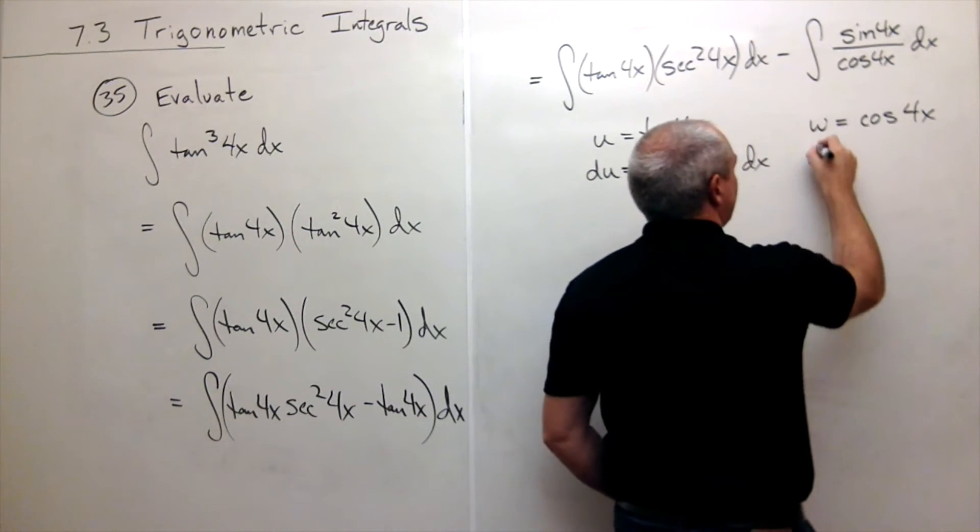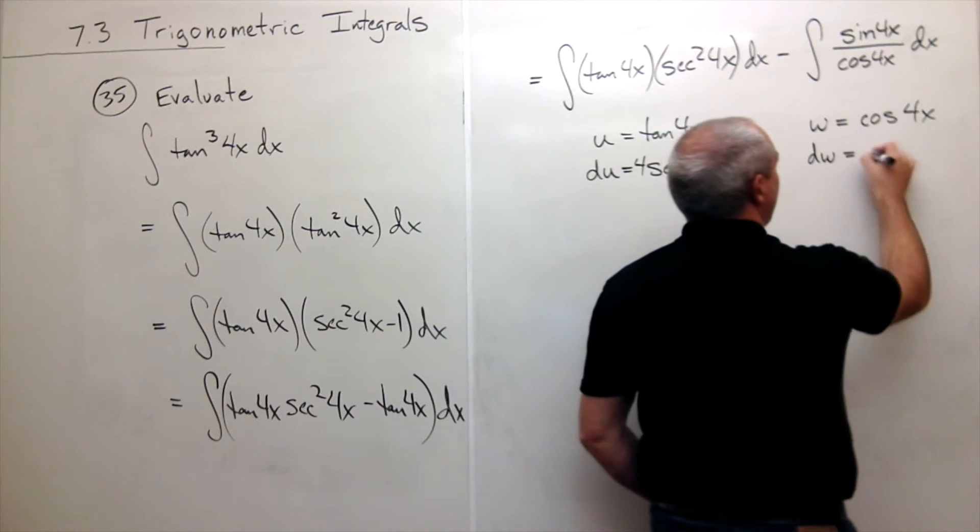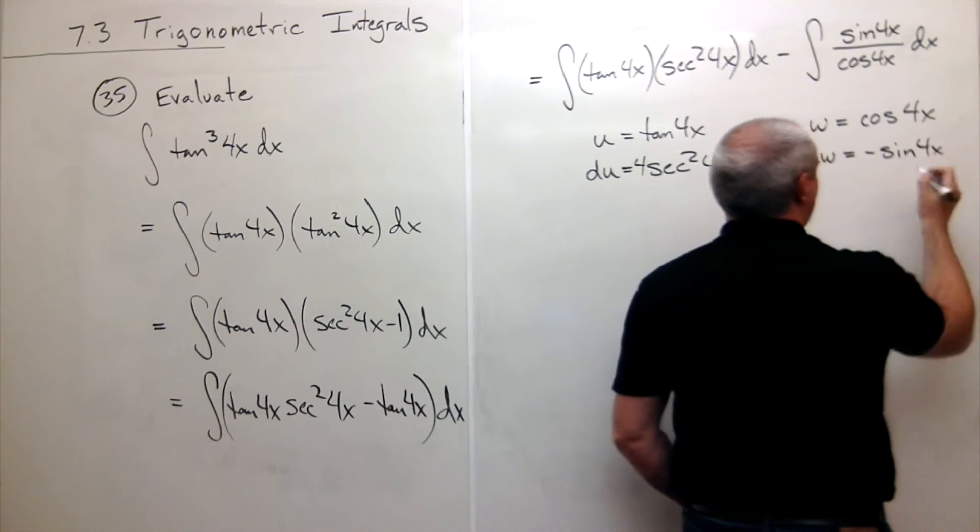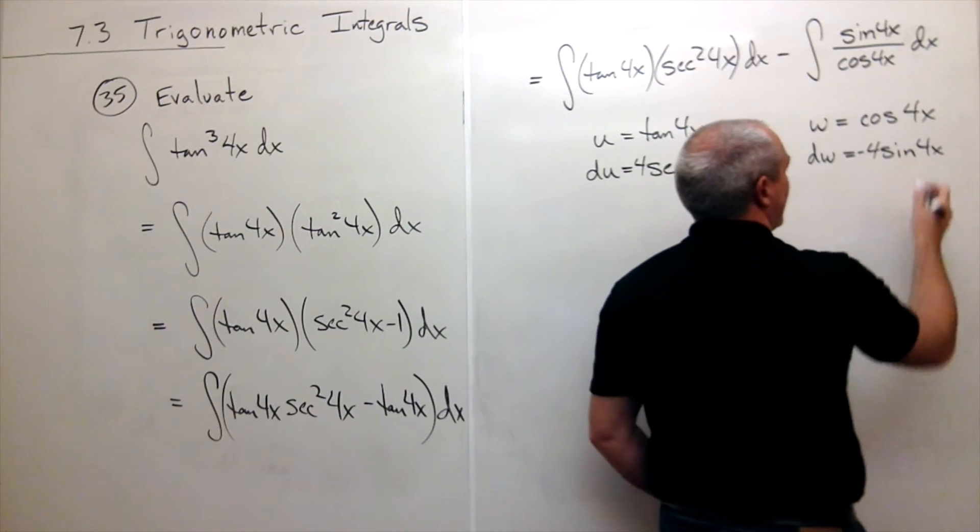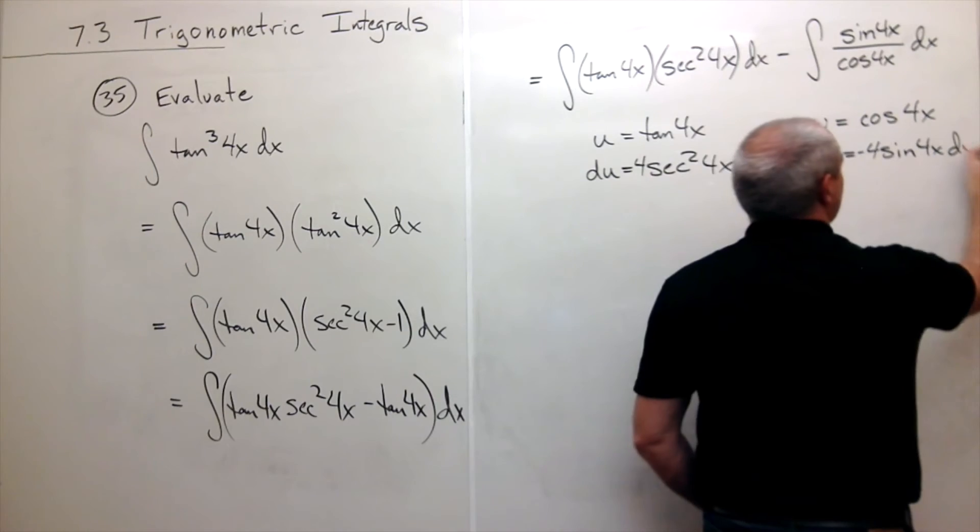So dw would be negative sine of 4x times 4. So maybe I'll just write this as minus 4 sine of 4x dx.